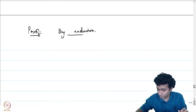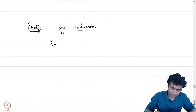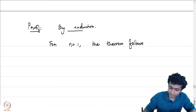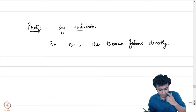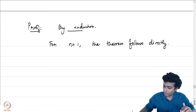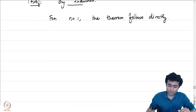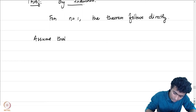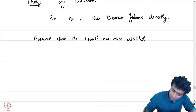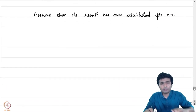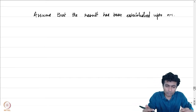For n = 1 the theorem is straightforward — it follows directly because the polynomial a₁z + a₀ is already almost in the form we want: we can write it as a₁(z − (−a₀/a₁)). Assume the result has been established for degrees up to n − 1. We will prove it for degree n by contradiction.